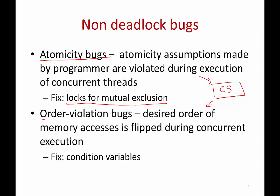The other type of non-deadlocked bugs are order violation bugs, where the programmer implicitly assumes one thread runs first and does something before another thread runs. But sometimes the OS scheduler may execute threads in the wrong order. In such cases, you should use condition variables to ensure that the required ordering between threads is preserved.